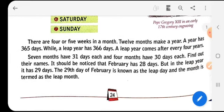Now there are four or five weeks in a month. Sometimes we have four weeks and sometimes we have five weeks in one month. Twelve months make a year. So when four or five weeks make a month and then twelve months together make one year. A year has 365 days while a leap year has 366 days. A leap year comes after every four years.